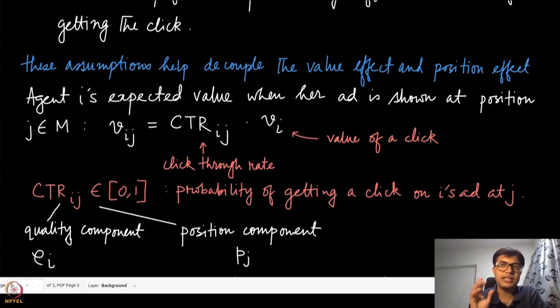This helps us decouple the value effect and the position effect. Once you get a click, the user goes to the advertiser's website and gets the same value whether the click came from the first slot or the last slot. But there is a probability of getting a click which has a position effect.